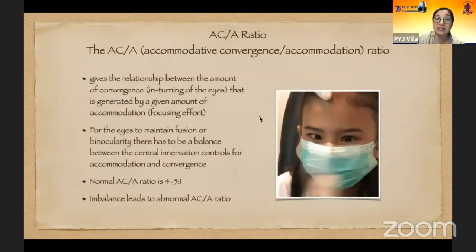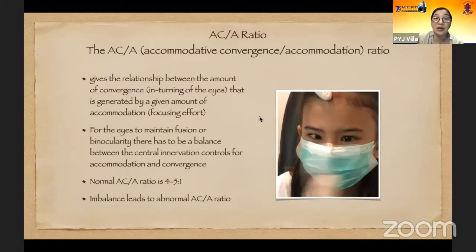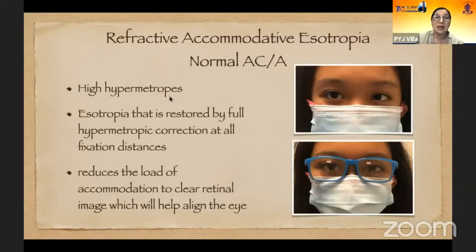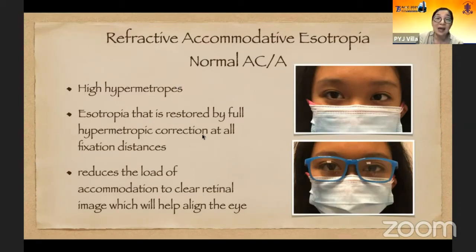What about ACA ratio? This gives the relationship between the amount of convergence — the interning of the eyes — that is generated by a given amount of accommodation, the focusing effort. For eyes to maintain fusion or binocularity, there has to be a balance between the central innervation controls for accommodation and convergence. Normal ACA ratio is around 4 to 5 is to 1, and imbalance leads to an abnormal ACA ratio. In patients with refractive accommodative isotropia, their ACA ratio is usually normal, and isotropia is restored fully once the full hypermetropic correction is given at all fixation distances.